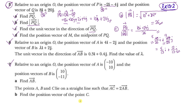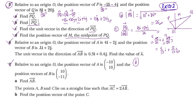Next: find the position vector of M, the midpoint of PQ. Let me draw a simple diagram — this is PQ, M is the midpoint, and O is the origin. To find OM, one method is OP plus PM, where PM equals half of PQ. Another way is OQ plus QM, where QM equals half of QP.